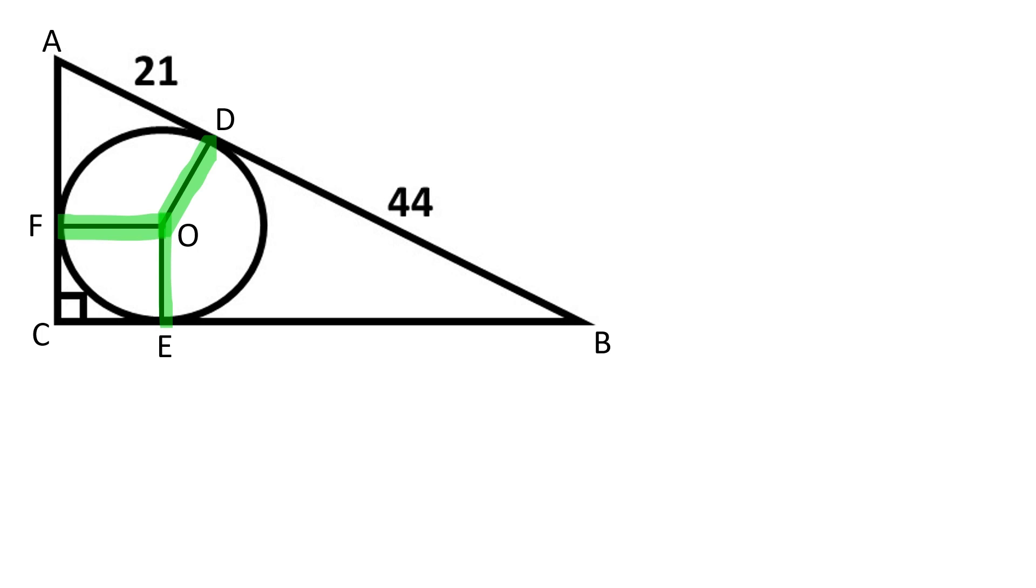Let's draw the radii of the circle to the sides AC, AB and BC. The radius of a circle is perpendicular to the tangent line through its end point to the circle's circumference.